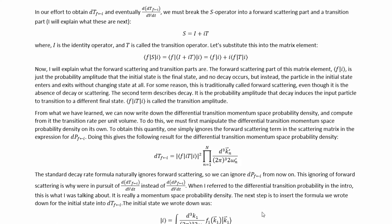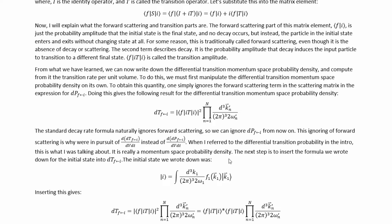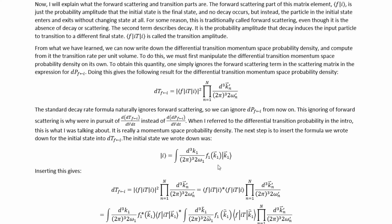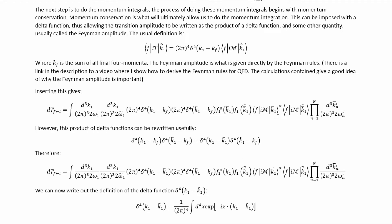The next step is to insert the formula for the initial state into this quantity and do the momentum integrals. Momentum conservation is what will ultimately allow us to do the momentum integrals. This can be imposed with a delta function, allowing the transition amplitude to be written as the product of a delta function and some other quantity usually called the Feynman amplitude, where K_f is the sum of all final four momenta. The Feynman amplitude is what is given directly by the Feynman rules. Inserting this form gets us the next result.